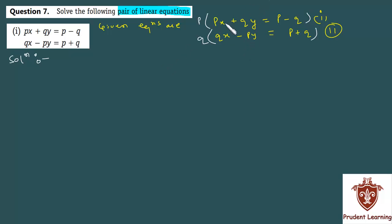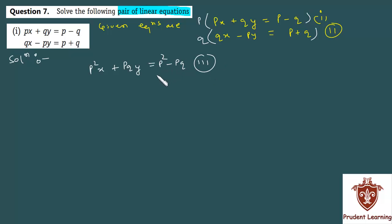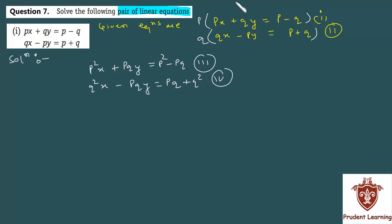Now, the first equation becomes: P squared x plus PQy is equal to P squared minus PQ — call it equation 3. The second equation becomes: Q squared x minus PQy is equal to PQ plus Q squared — equation 4.